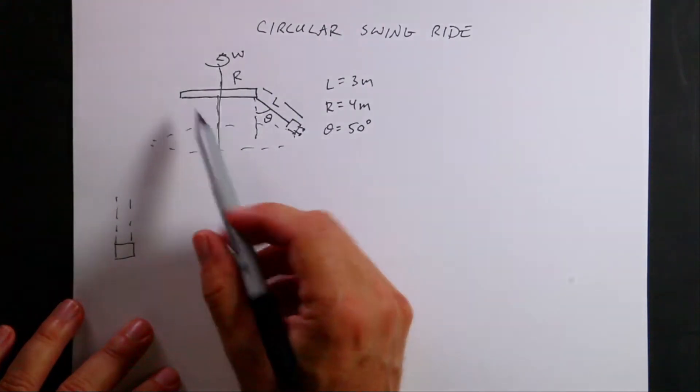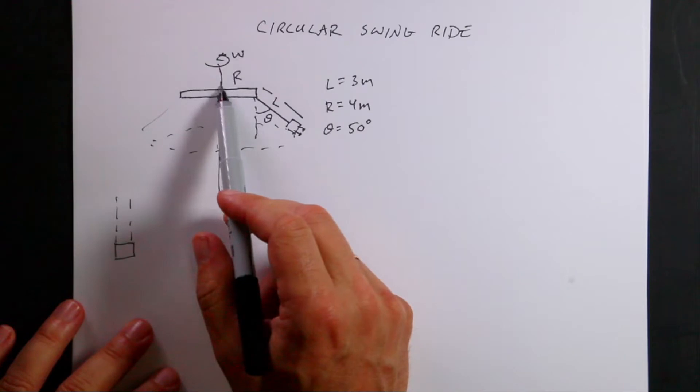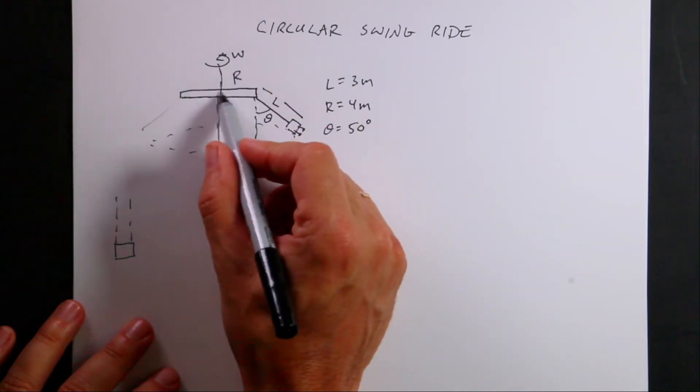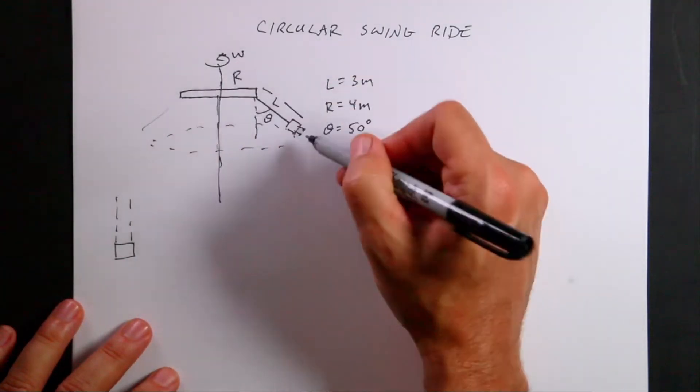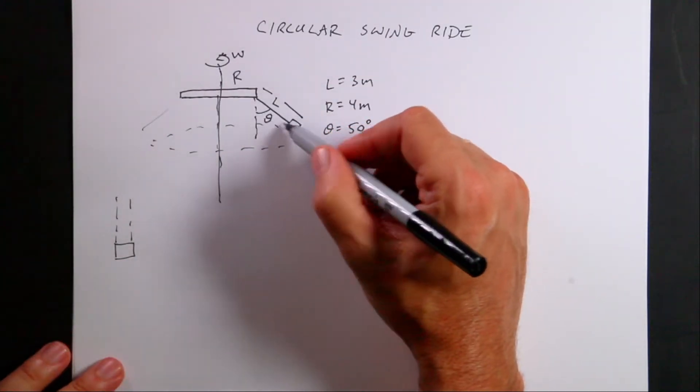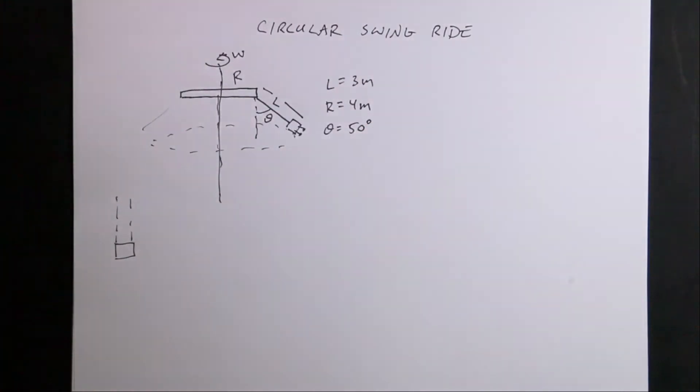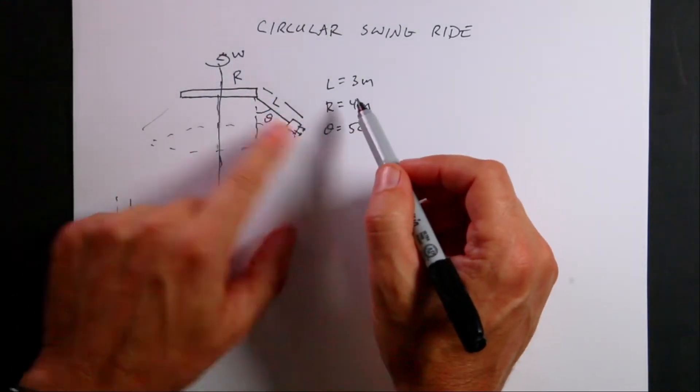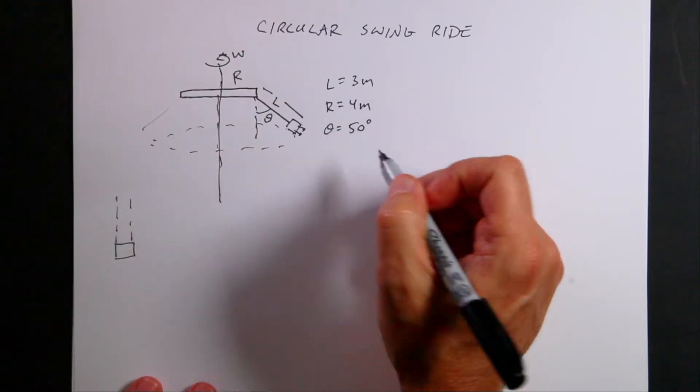So in this case, there are chairs all around, we're just looking at one of them. There's a flat part up here with radius R. Then there's a cable hanging down of length L, and the person is swinging out at angle θ. The question is, how fast does this have to rotate for that to happen? I picked L = 3 meters, R = 4 meters, and θ = 50 degrees.